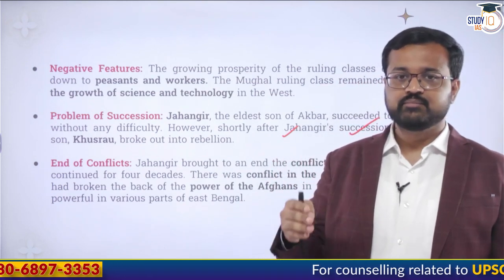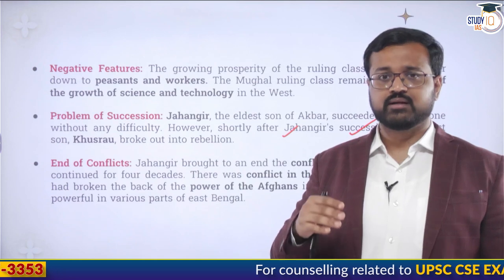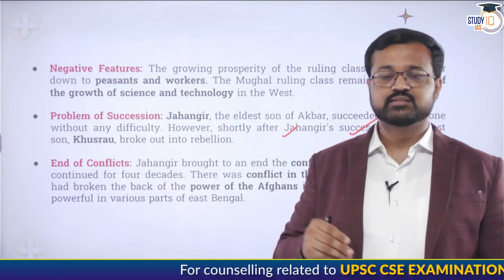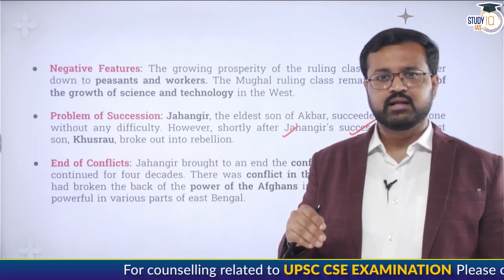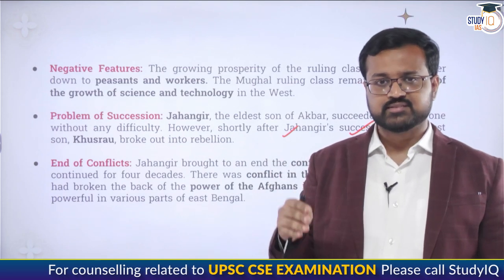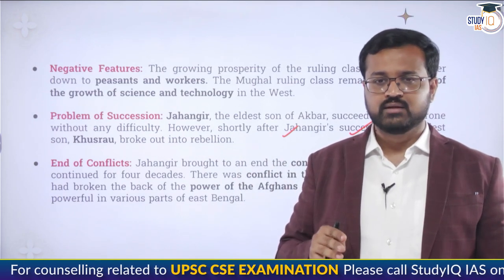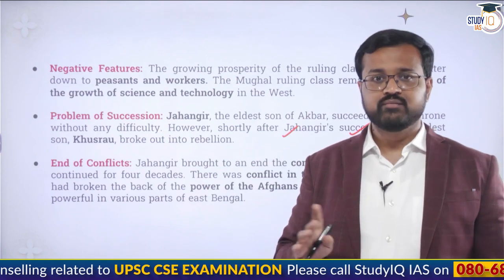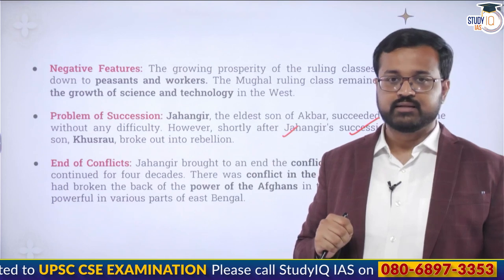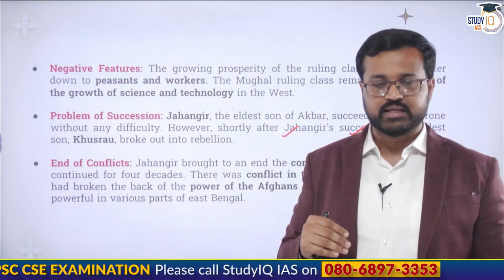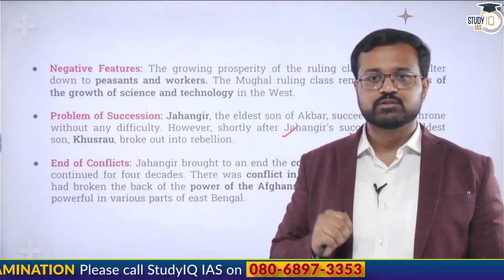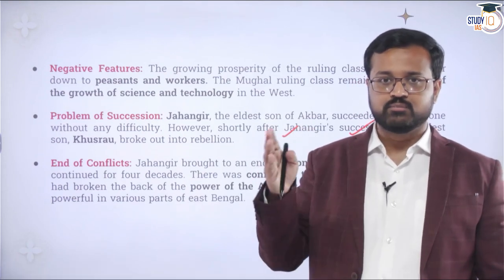In the Mewar area, Maharana Pratap was the last remaining citadel of Rajputana resistance against Mughals. After his defeat, the Mewar area came under Mughal control. Around 1613, a Mughal-Mewar treaty was signed between Ajit Singh and Jahangir. After this treaty, even Mewar accepted Delhi's suzerainty — and a peaceful relation between Rajputana and the Mughal dynasty began.